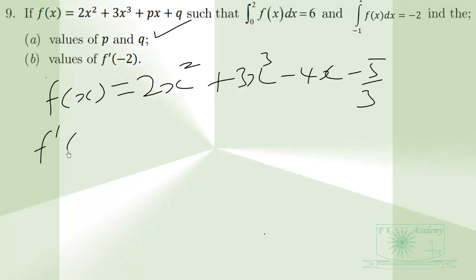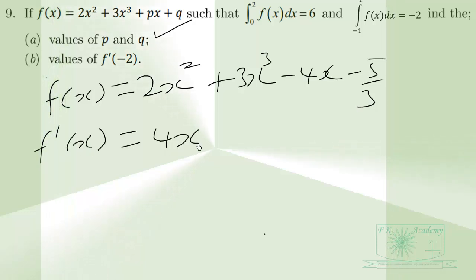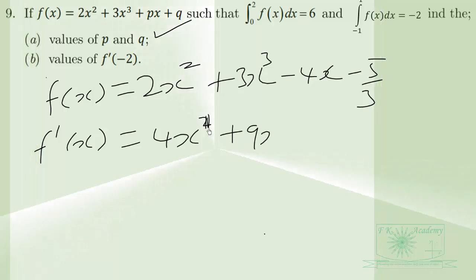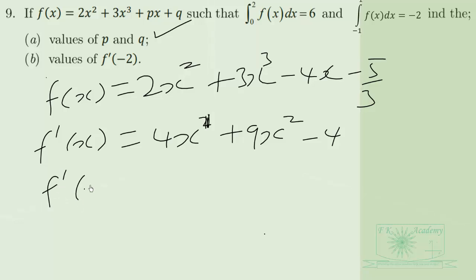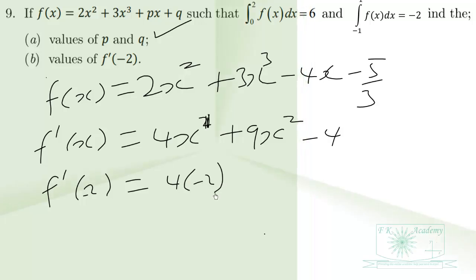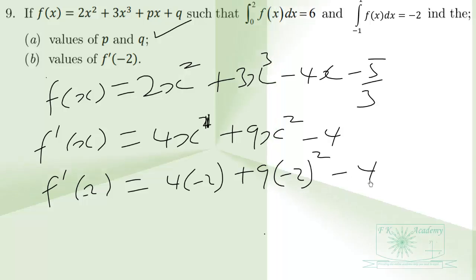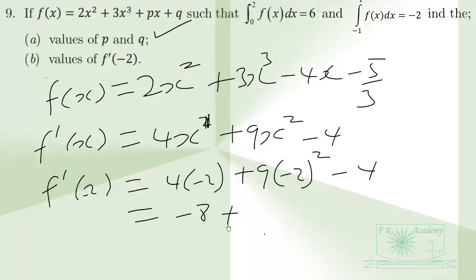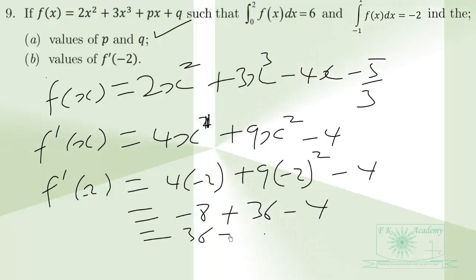Now f prime of x equals 4x plus 9x squared minus 4. So f prime of negative 2 equals 4 times negative 2 plus 9 times negative 2 squared minus 4, which gives negative 8 plus 9 times 4 minus 4, equals negative 8 plus 36 minus 4, equals 36 minus 12, which equals 24.